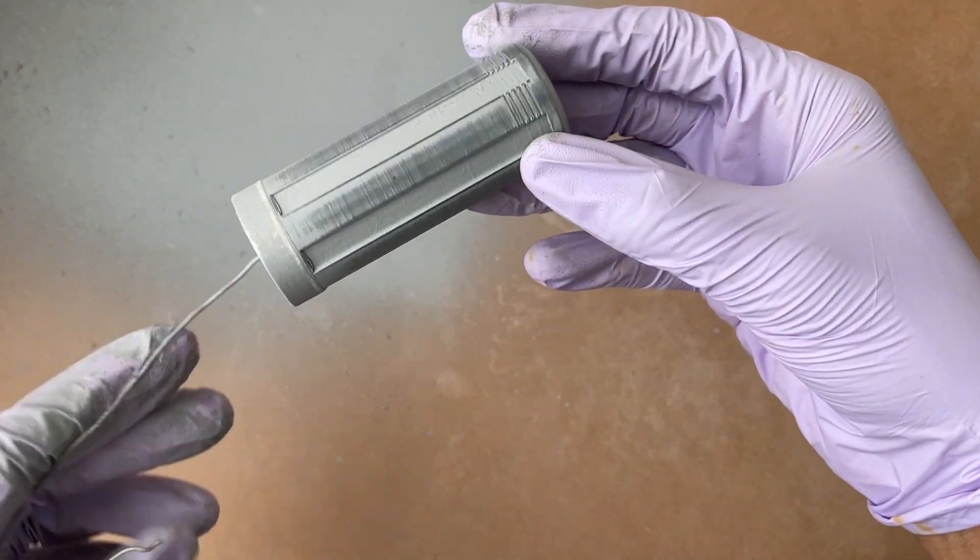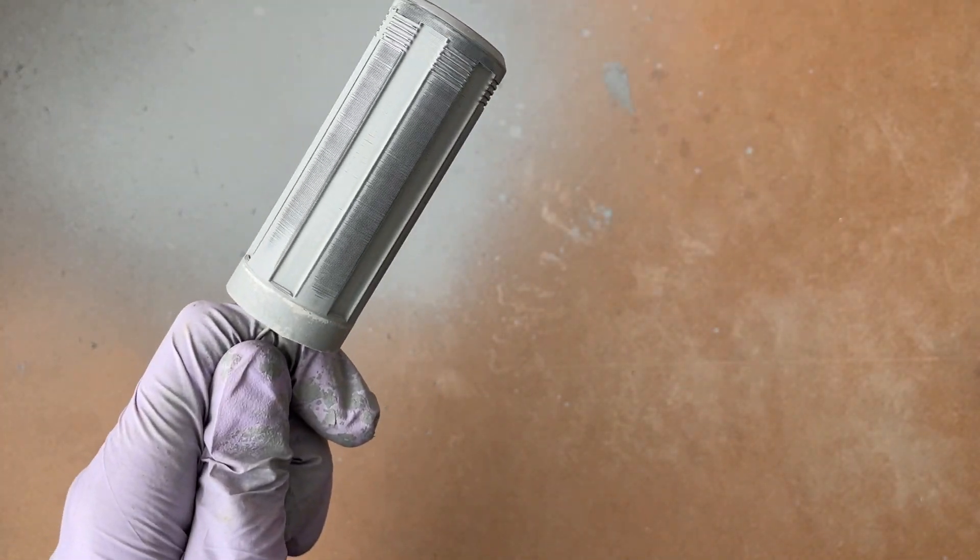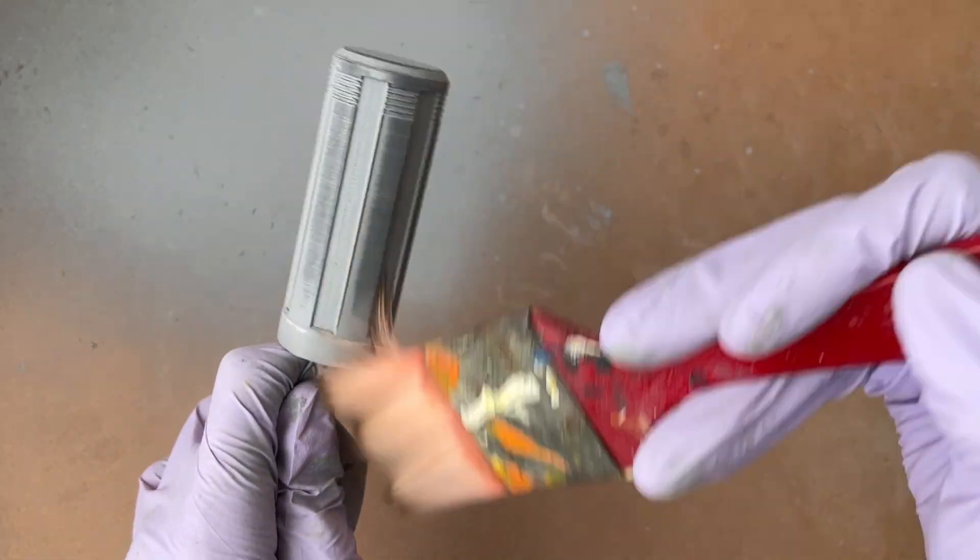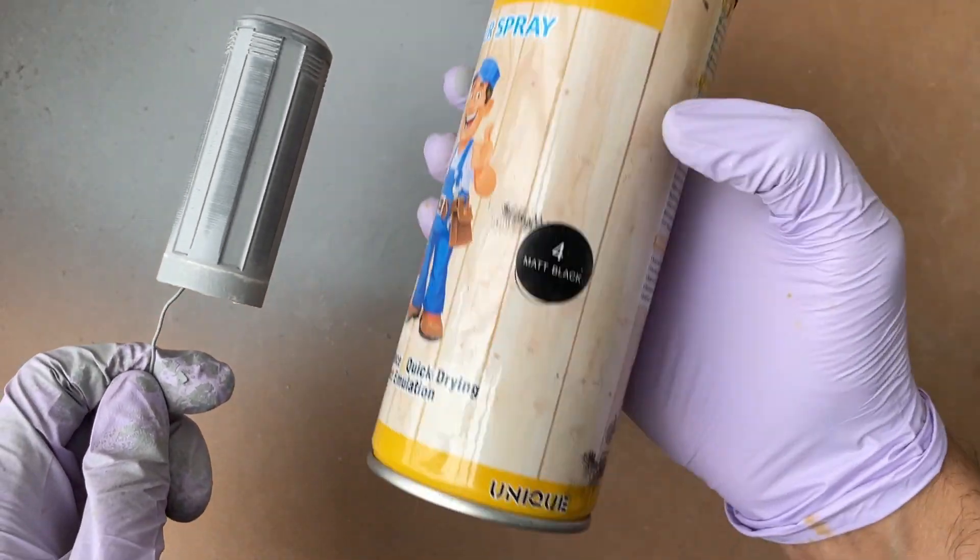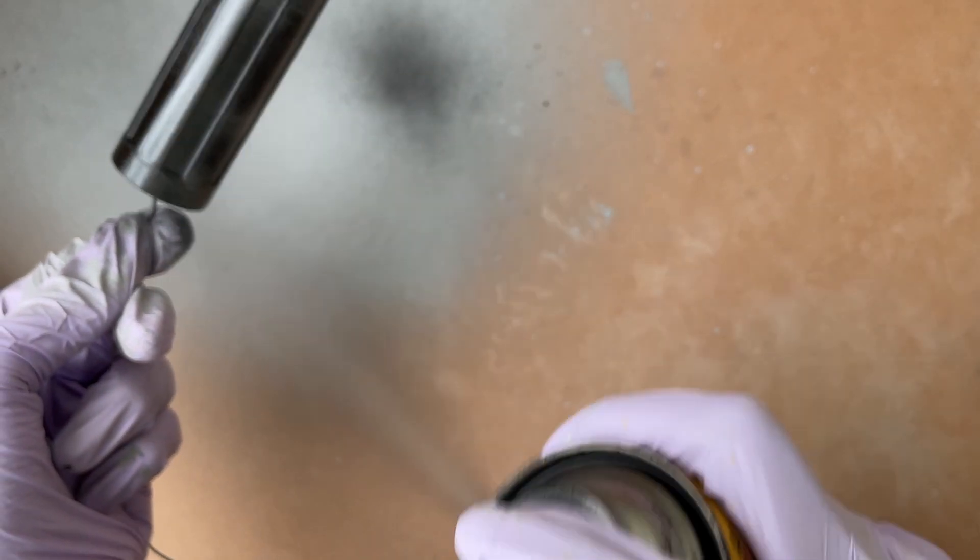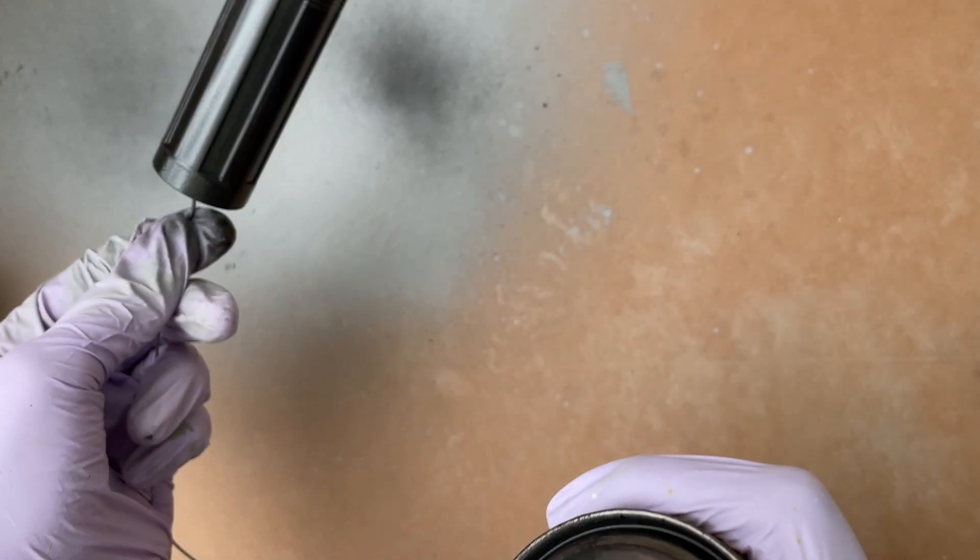Once you're done with the sanding, let's just get started with the painting process. Here I'm just gonna use a brush to get any of the dust off of it. And here I'm using a matte black spray paint. I'm just gonna go ahead and do the same with the other parts.